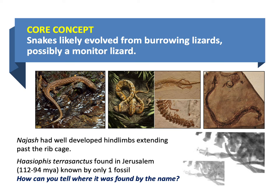You can kind of tell where it's found by the name — Haasiophis terrasanctus, 'terra sanctus' meaning sacred ground. It's found in Jerusalem, a holy city for all the Abrahamic religions — Judaism, Christianity, and Islam. The Holy Land — it's called that for a reason.